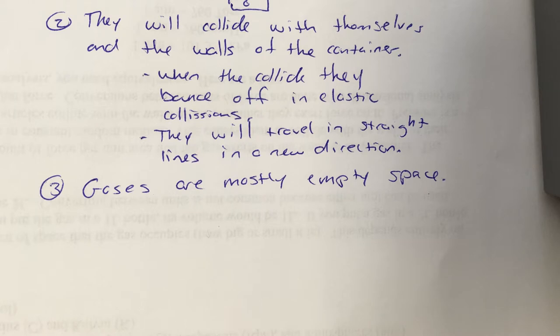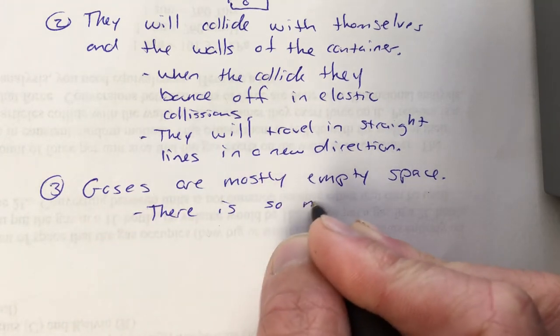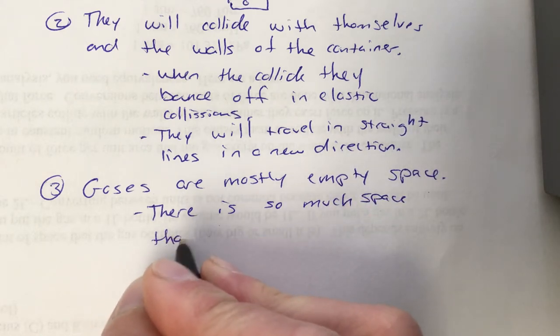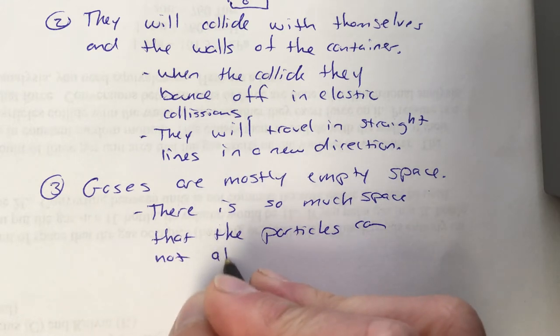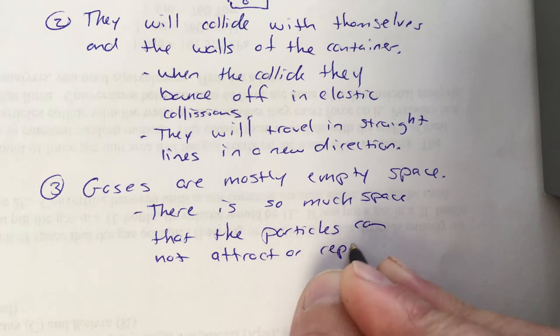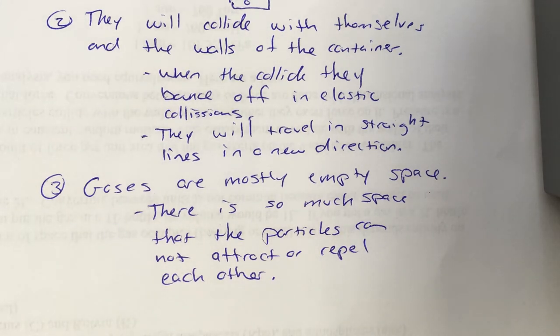So much so that the particles don't interact with each other. They cannot attract or repel each other. Think of the interaction between particles like the interaction between magnets. Magnets can attract or repel each other, but only if they're close enough to do it. You take two magnets and get them close together, you can feel a strong pull of attraction and repulsion, depending on how they line up. But as you pull those magnets apart, that attraction and repulsion gets weaker and weaker until it eventually disappears. These particles in a gas are so far away from each other that there is no attraction or repulsion.